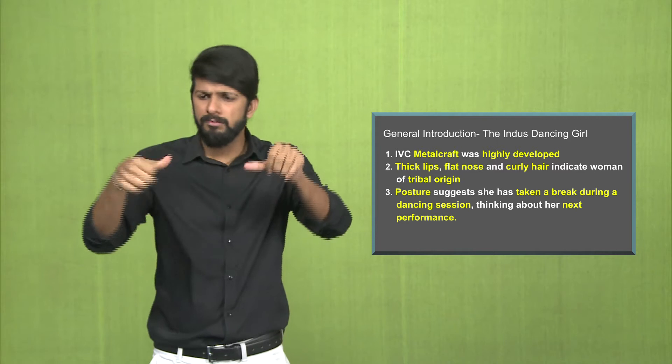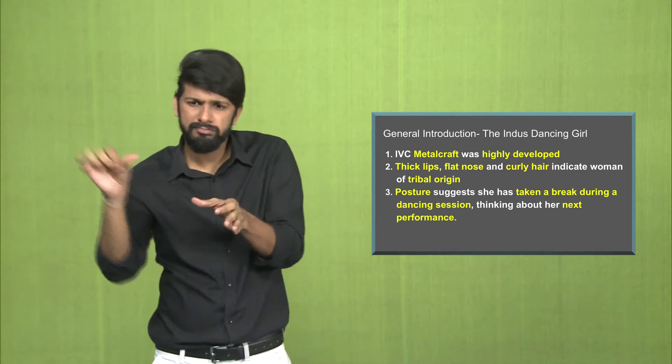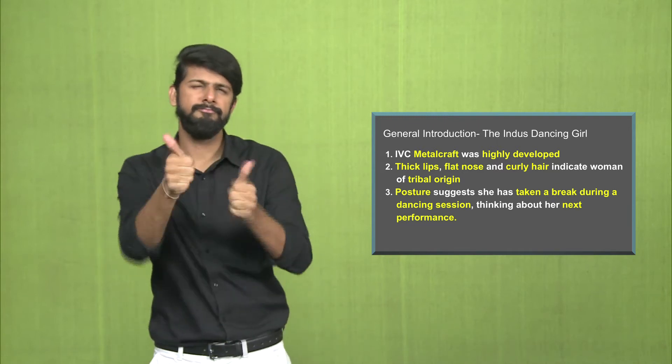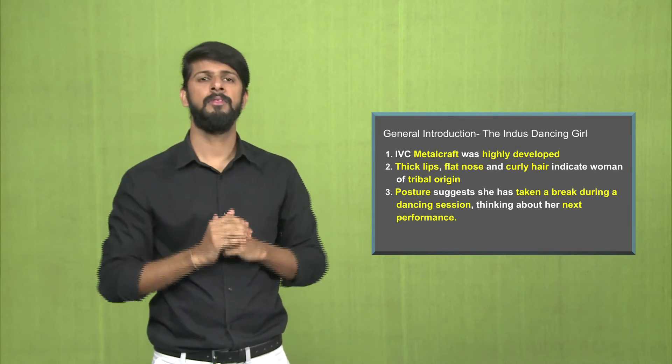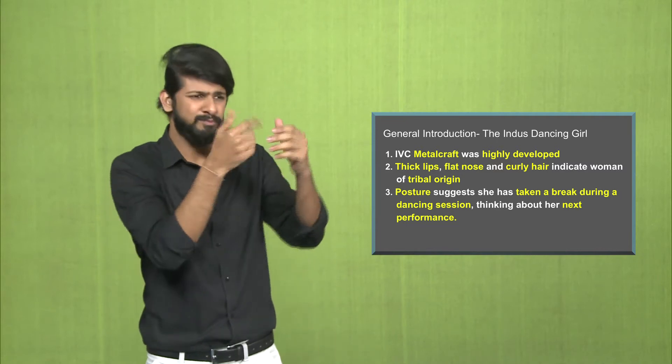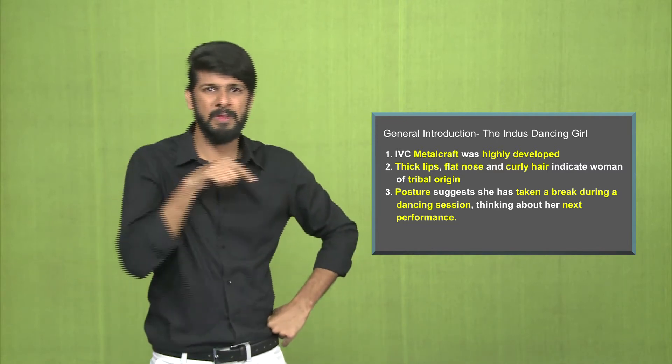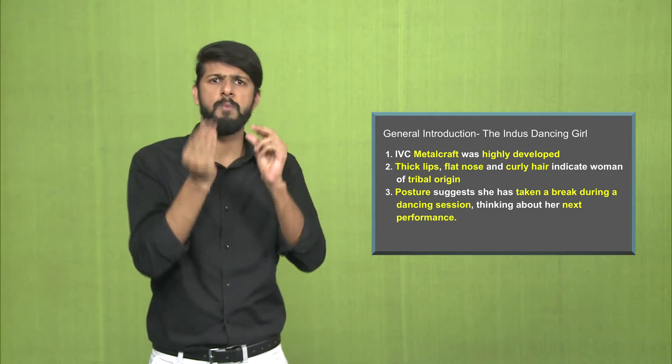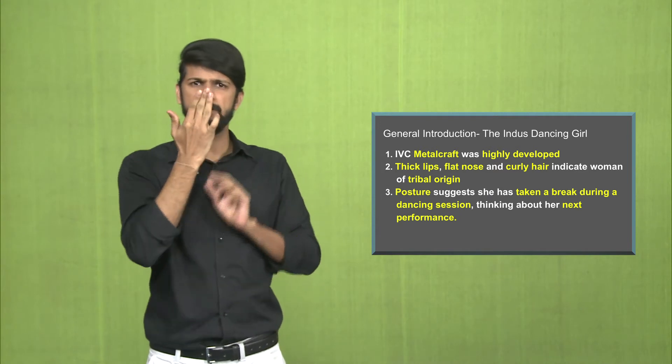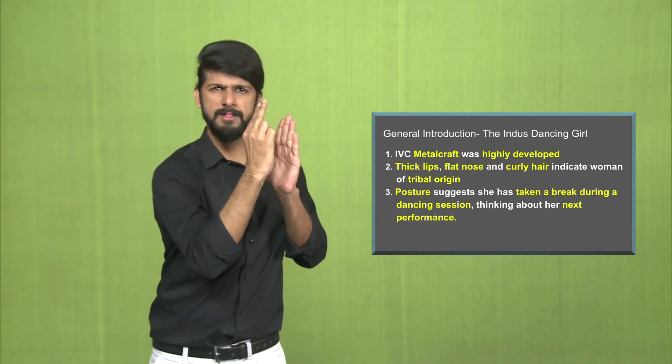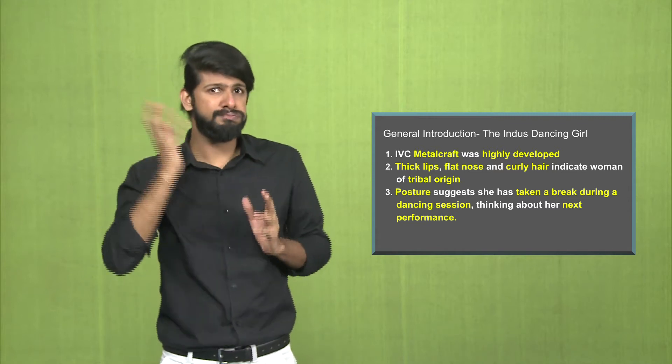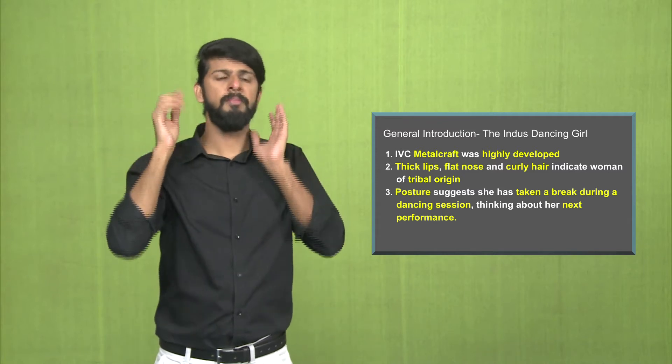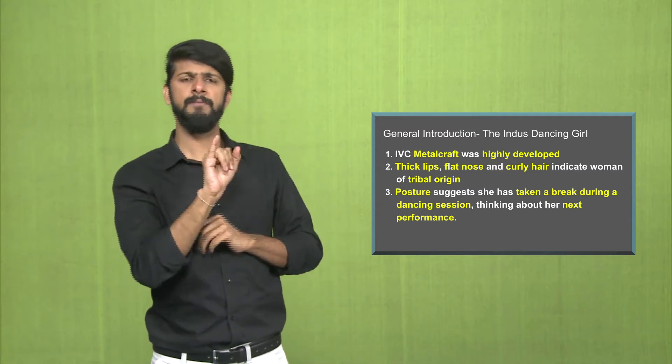During the Indus Valley Civilization, metal craft was highly developed. There were experts, highly skilled, who knew how to craft metal sculptures. The dancing girl's sculpture has certain features which indicate that the woman could be of tribal origin. It has thick lips, flat nose, and the hair is curly in shape of a bun.